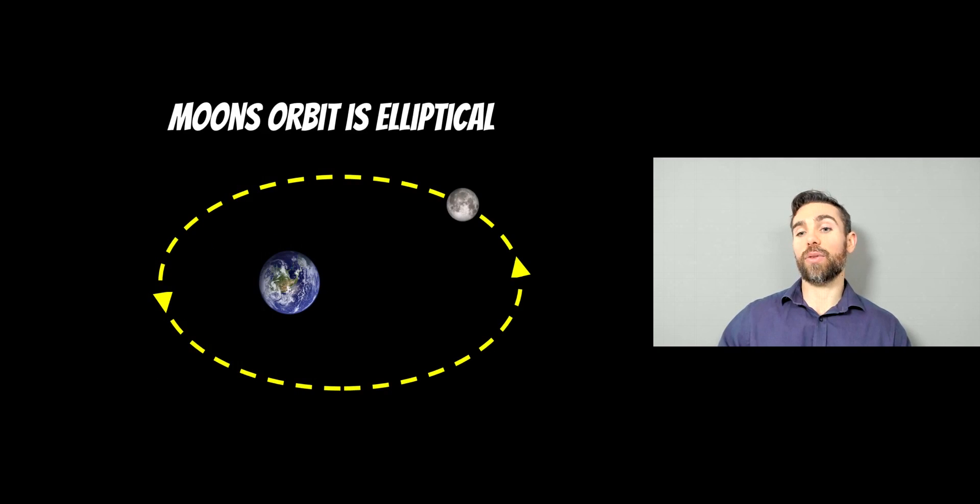Now, the other important thing is that the moon's orbit is elliptical. So it's not a perfect circle. It is elliptical. And with elliptical orbits, you have parts where it's closest to the Earth and parts where it's furthest away.